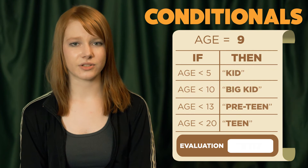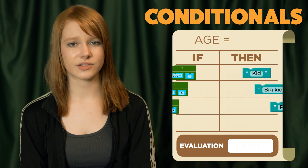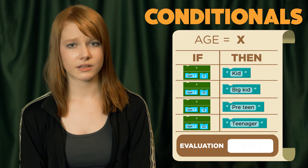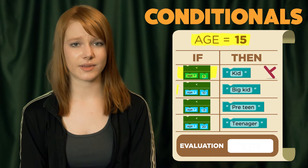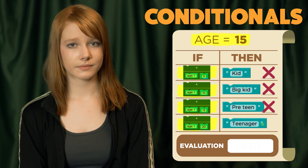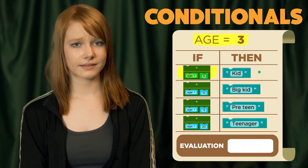Here's a simple conditional to check the variable age and return a string describing someone of that age. Let's see what happens when we evaluate with age set to 15. What about when age is 3?